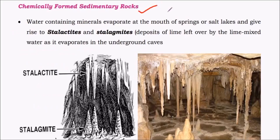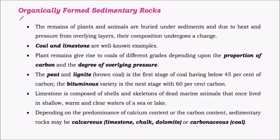Chemically formed sedimentary rocks are formed mainly due to evaporation of mineral-rich water, giving rise to structures like stalactites and stalagmites. Stalactites are attached to the roof of a cave, while stalagmites form on the base. Water rich in minerals like calcium carbonate evaporates, leaving behind mineral content that accumulates over time. Organically formed sedimentary rocks include coal and limestone. When plant remains are buried deep below sedimentary strata, they undergo chemical and physical changes giving rise to coal. When marine organisms are buried deep below sediments, they give rise to petroleum.